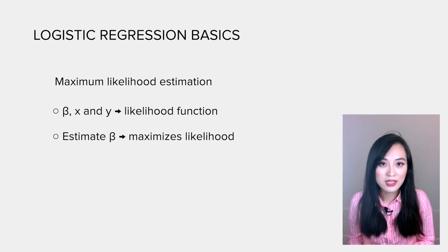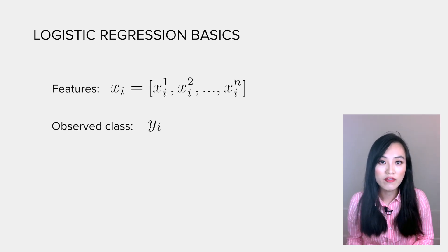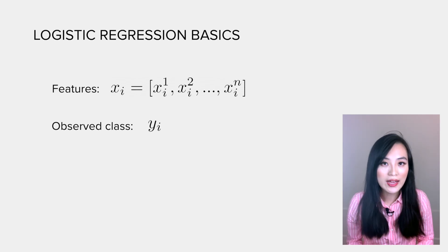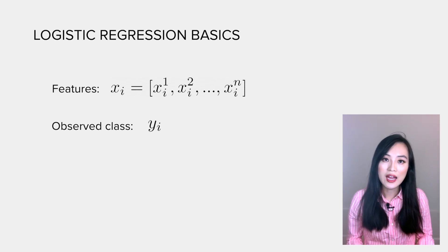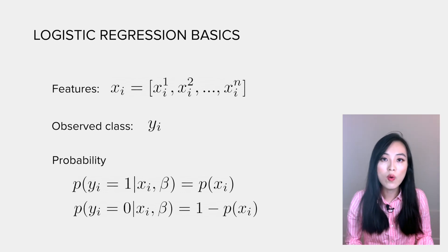So let's first write the likelihood of getting the observed class. For each training data point, we have a vector of features xi and an observed class yi. The probability of that class would either be P(xi) if yi equals 1, or 1 minus P(xi) if yi equals 0.